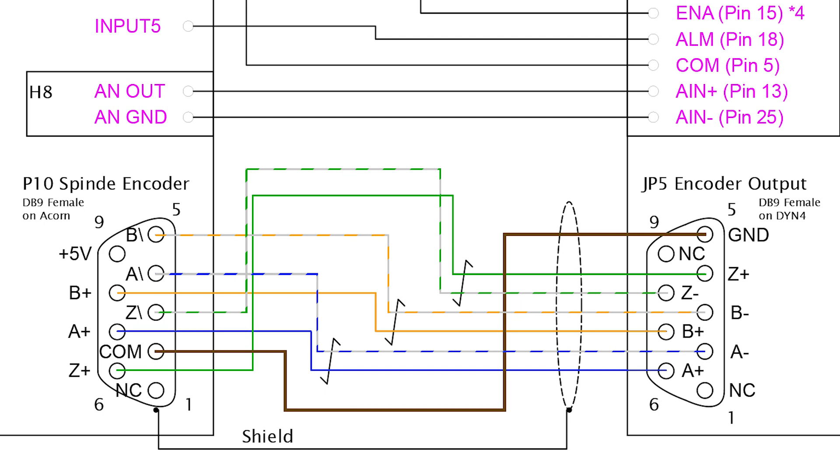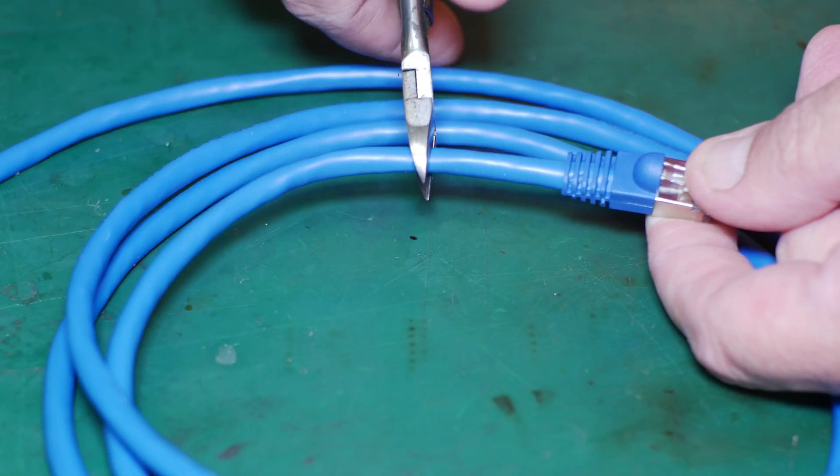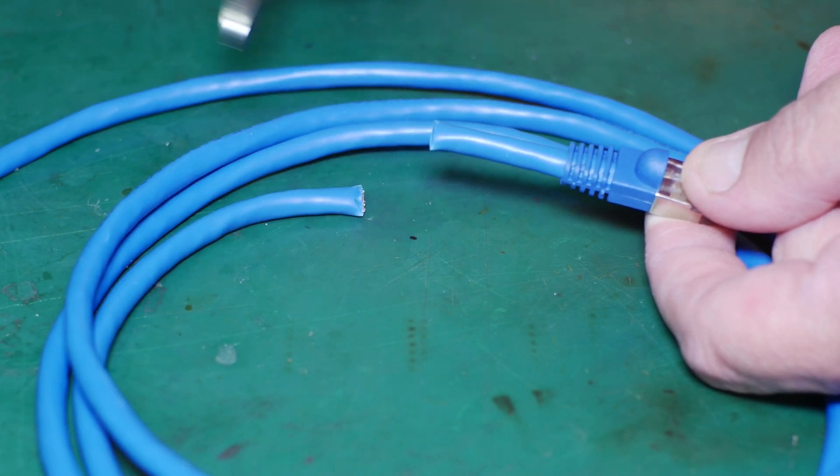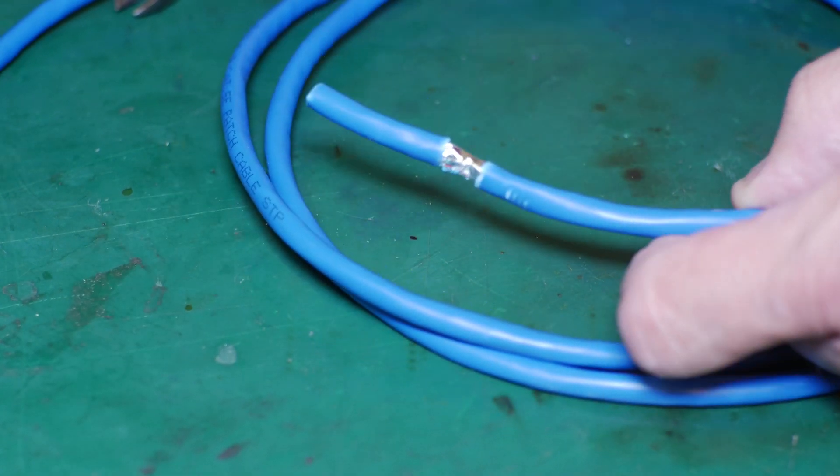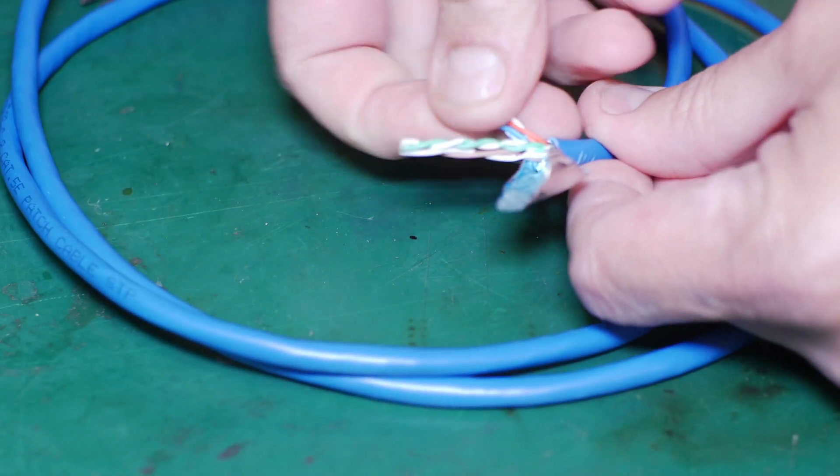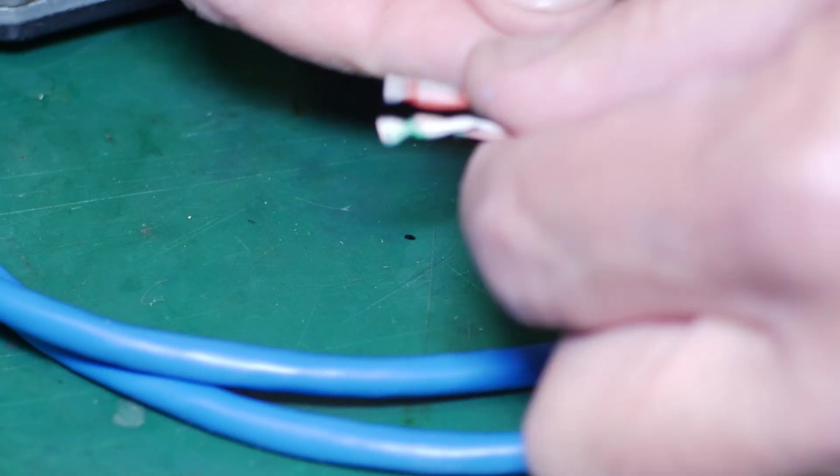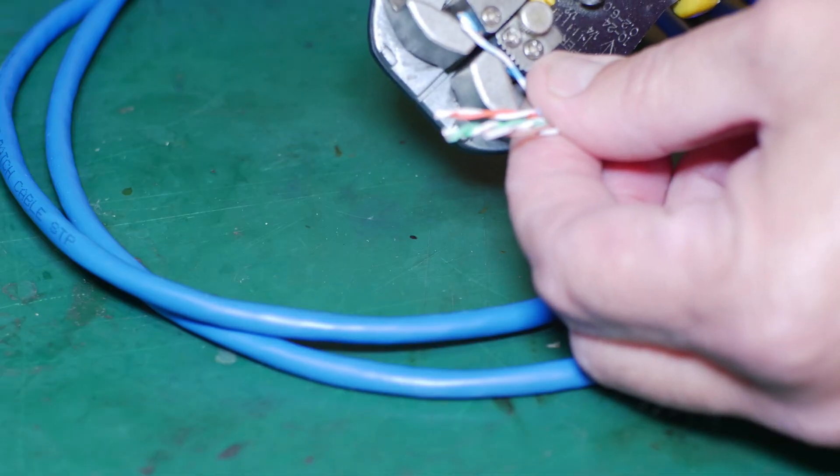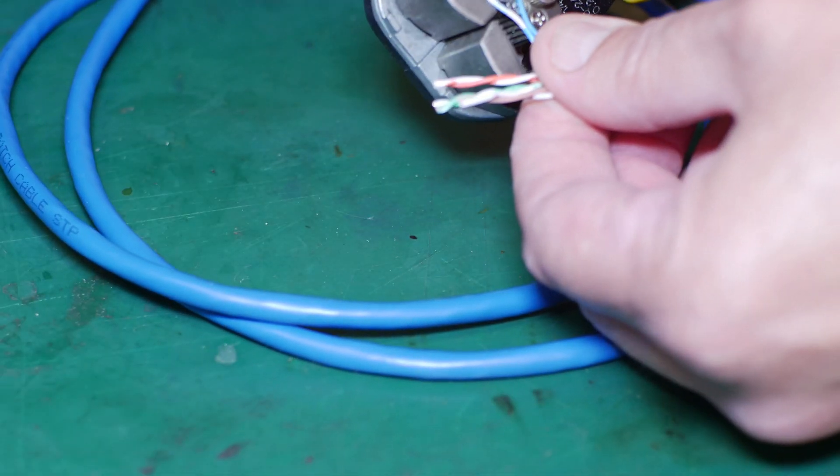Next up on the list was to make a cable to go from the DYN4 encoder output to the ACORN spindle encoder input. This requires three twisted pairs, plus a ground and an overall shield. At DMM Tech recommended I just use an Ethernet cable to make this up. And this is in lieu of a spindle encoder for the ACORN to regulate the motor speed.